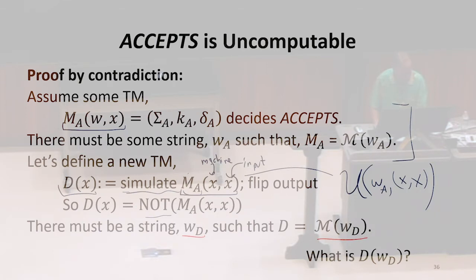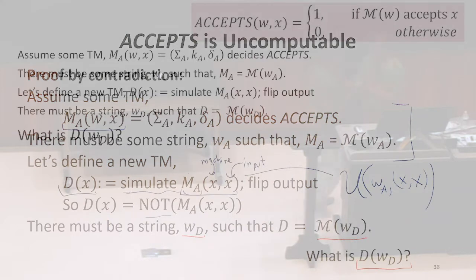And that means we can definitely ask the question, what should be the result of running D on its own description? WD is the string that describes D. What are our choices?